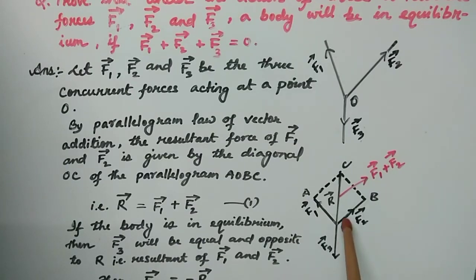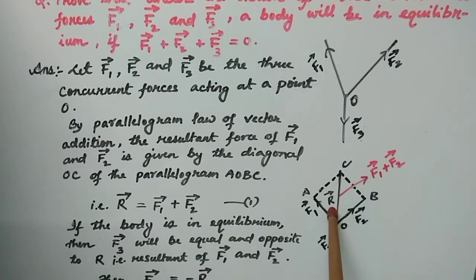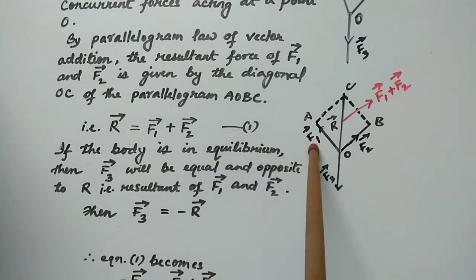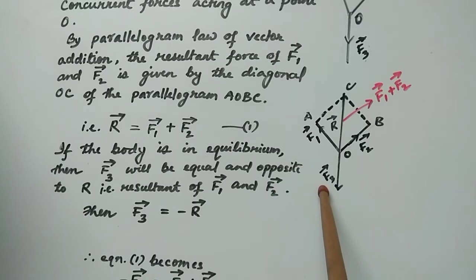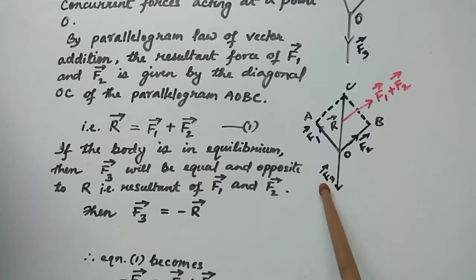Using the parallelogram law, F1 vector and F2 vector are represented by two adjacent sides, and the diagonal gives the resultant R vector. So R vector equals F1 vector plus F2 vector — this is equation 1. The equilibrium condition requires that F3 vector and R vector are equal and opposite — that is, F3 vector equals minus R vector.